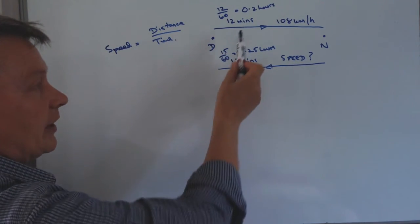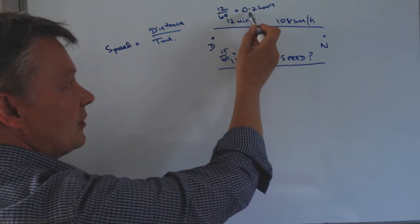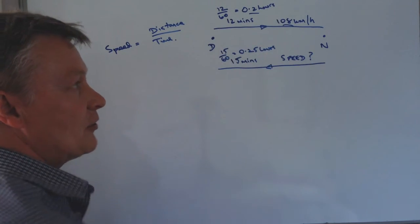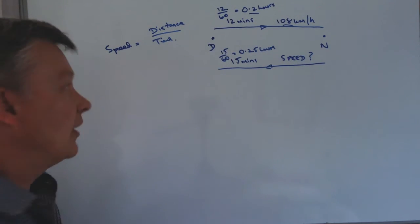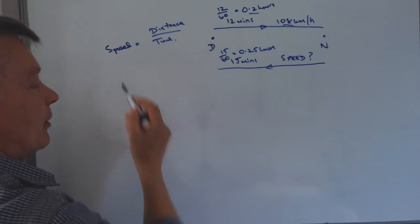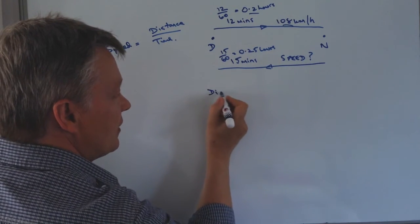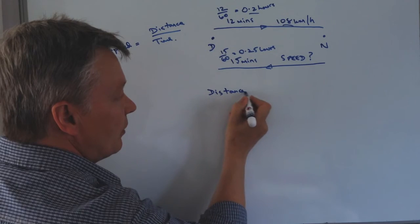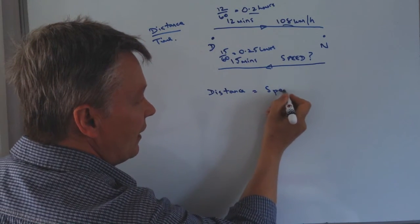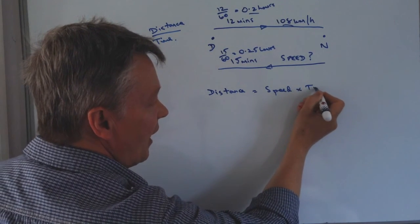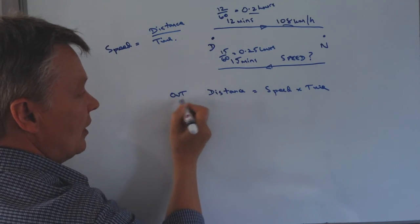So on the way out we're looking at working out the distance using 0.2 hours and 108 kilometers per hour. Well if we have a look at this formula here, it means if I want to work out the distance, I just multiply the speed and the time together. And remember in mind this is on the outward journey.